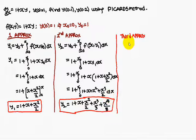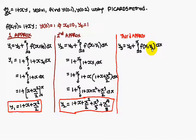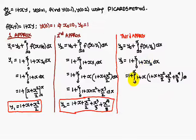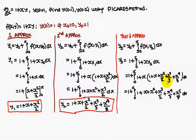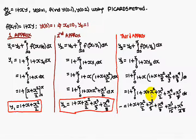Similarly, for the third approximation: y3 is equal to y0 plus the integral from x0 to x of f(x, y2) dx. Replace y with y2 in the function. You get 1 plus the integral from 0 to x of 1 plus x·y2 dx. Integrating term by term: integral of 1 is x, integral of x is x²/2, and so on.